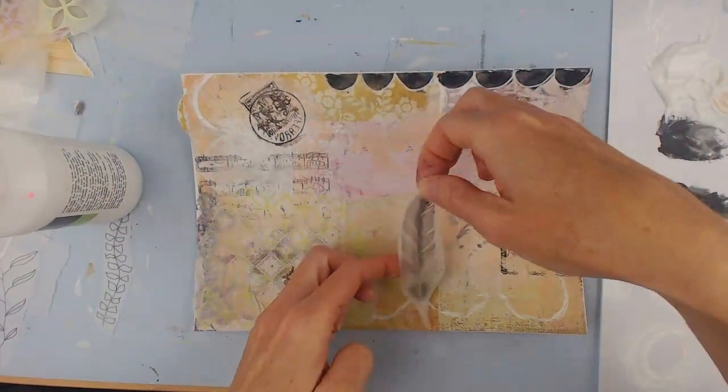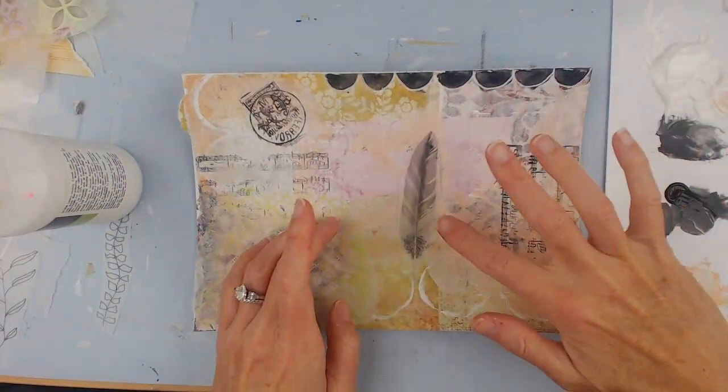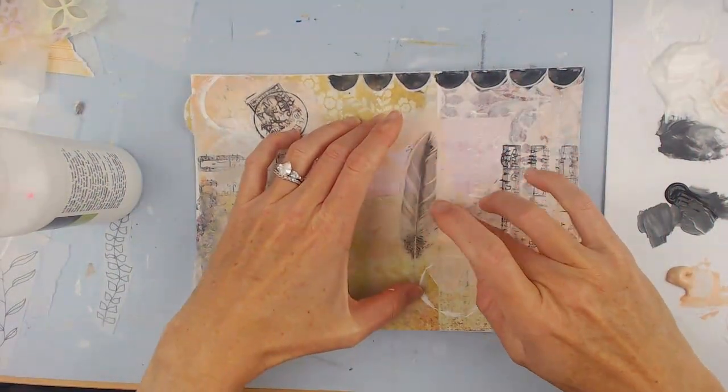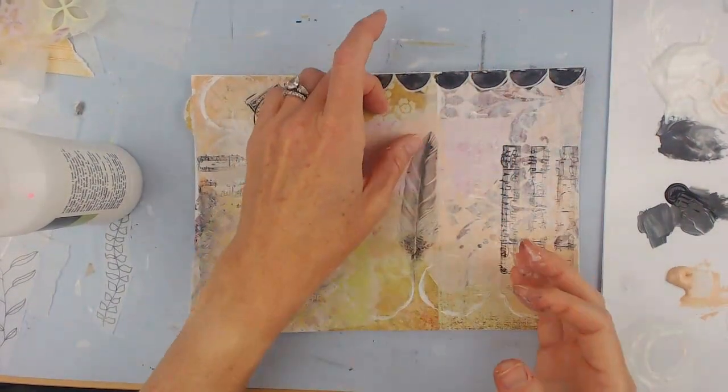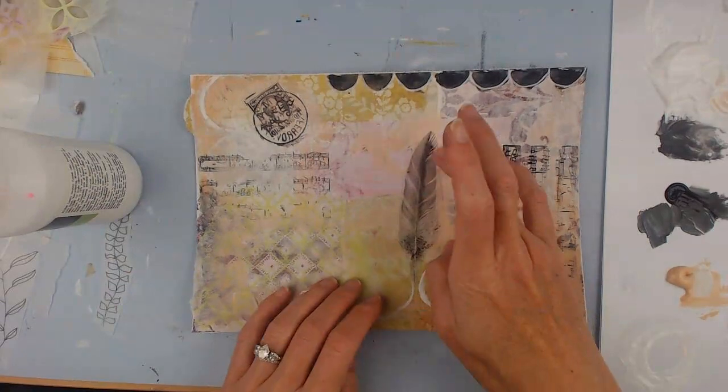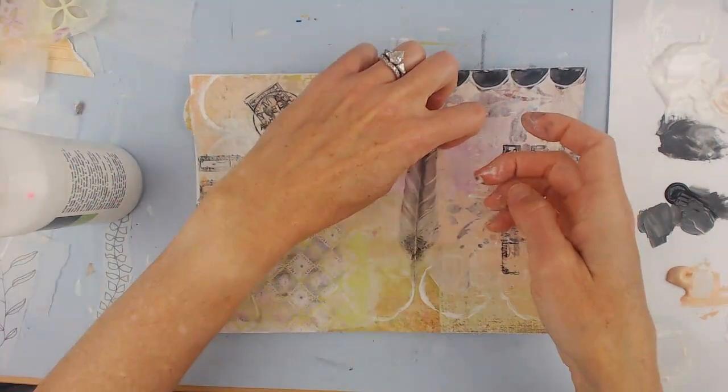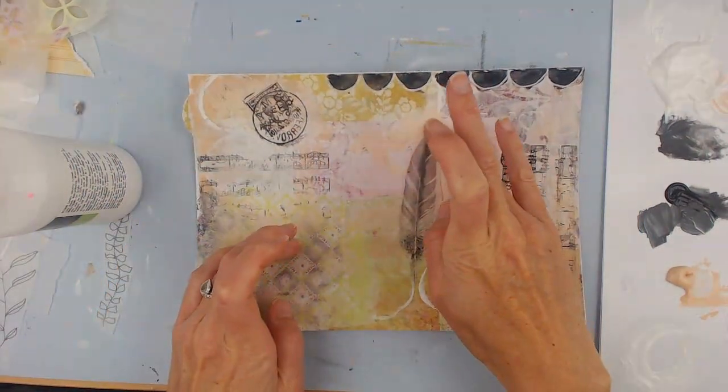Just kind of a focal point for the whole piece. And again, just lightly tapping on it so I don't run the ink on top, because it is printer ink, just inkjet print. So you have to be careful it doesn't get all gooey and messy.